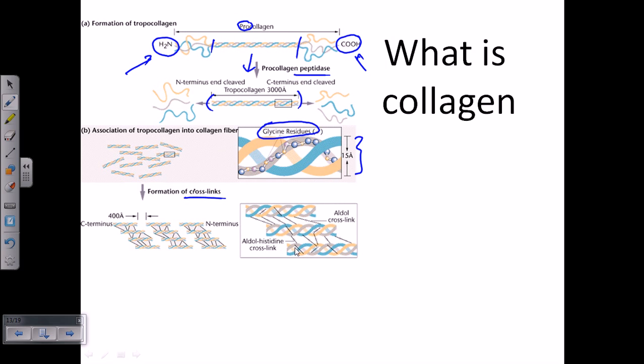These cross-links are called aldol histidine cross-links because the cross-linkage is conducted between histidine amino acids present in the collagen backbone through aldol condensation process. After cross-linking, we get a very strong fiber called collagen.